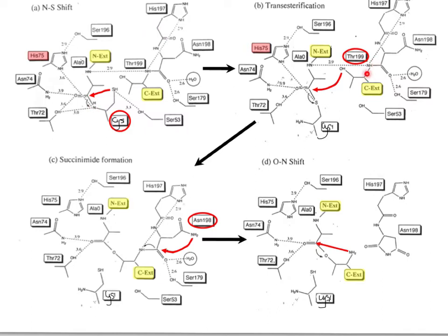In the transthioesterification step, the threonine OH is positioned by histidine 197 to attack and produce the transthioesterification. In the succinamide formation, asparagine 198 performs intramolecular cyclization, stabilized through histidine 197. Finally, the O-to-N acyl shift occurs where the nitrogen comes in, kicks that off, so the active site residues are critical for the entire process.